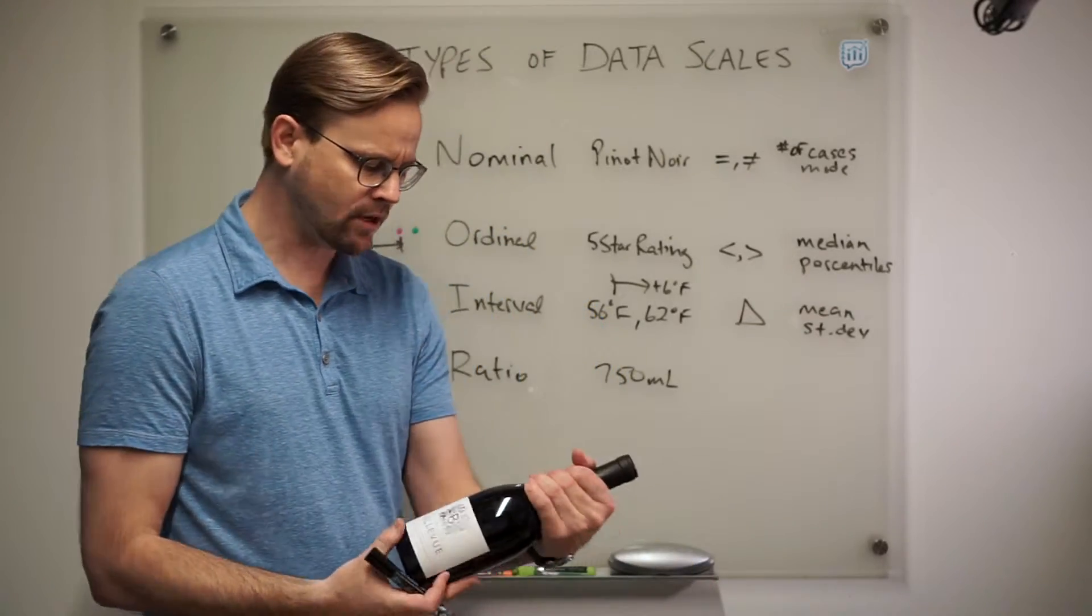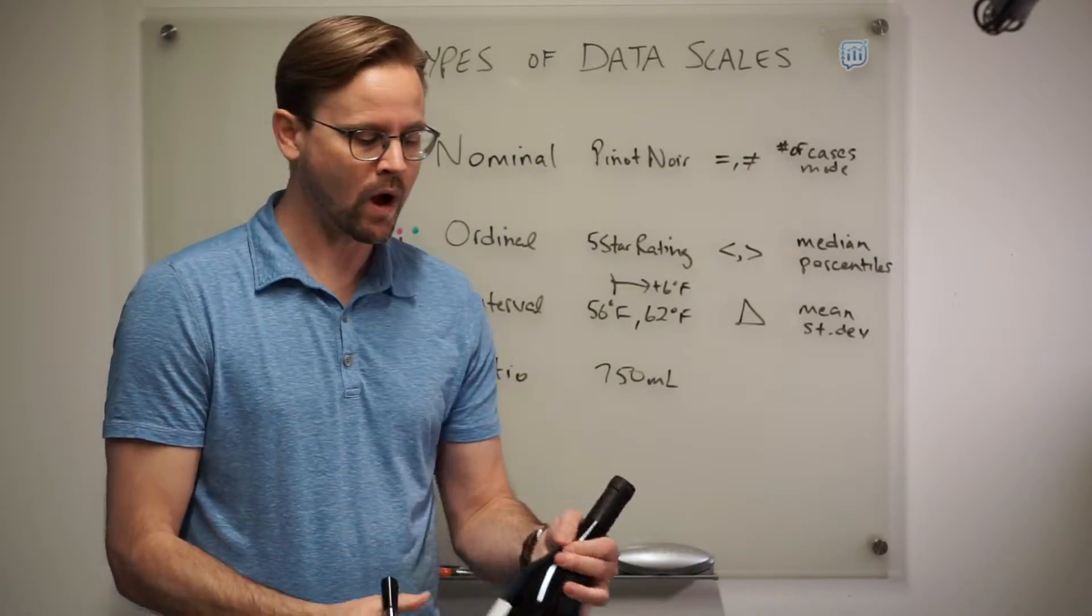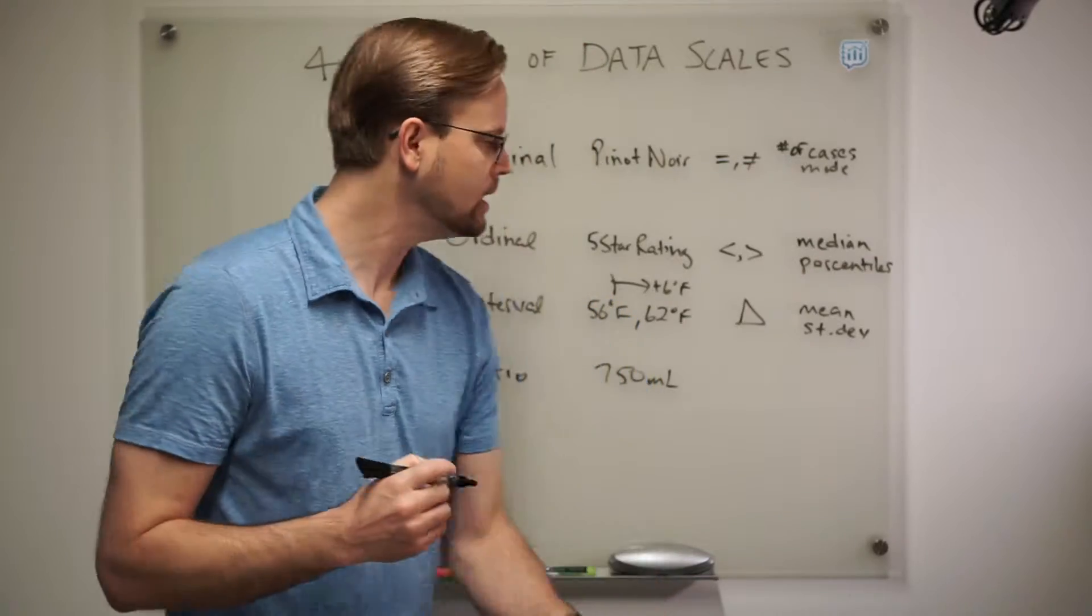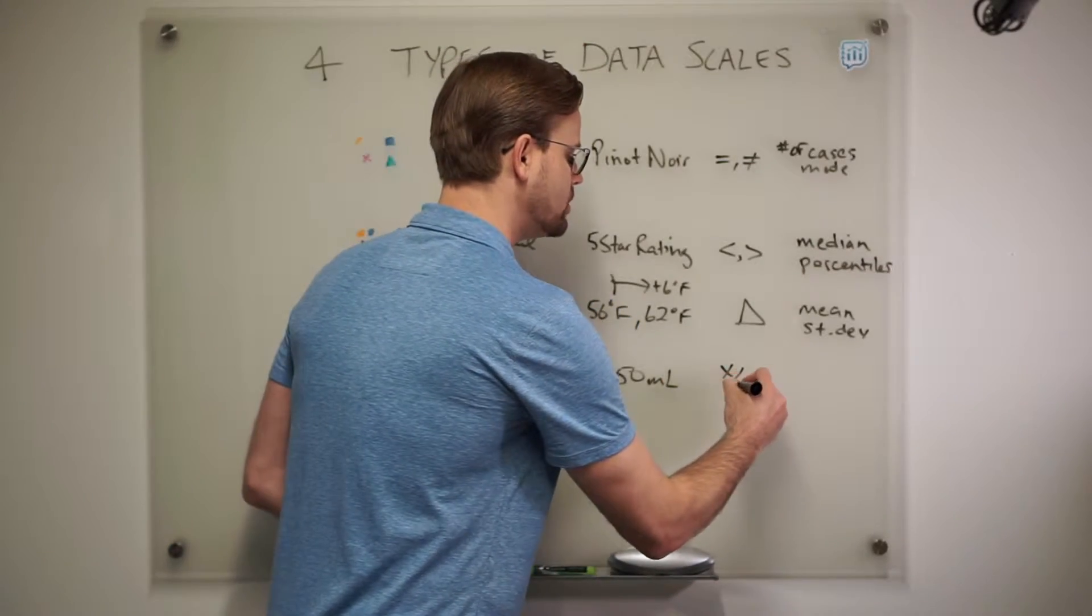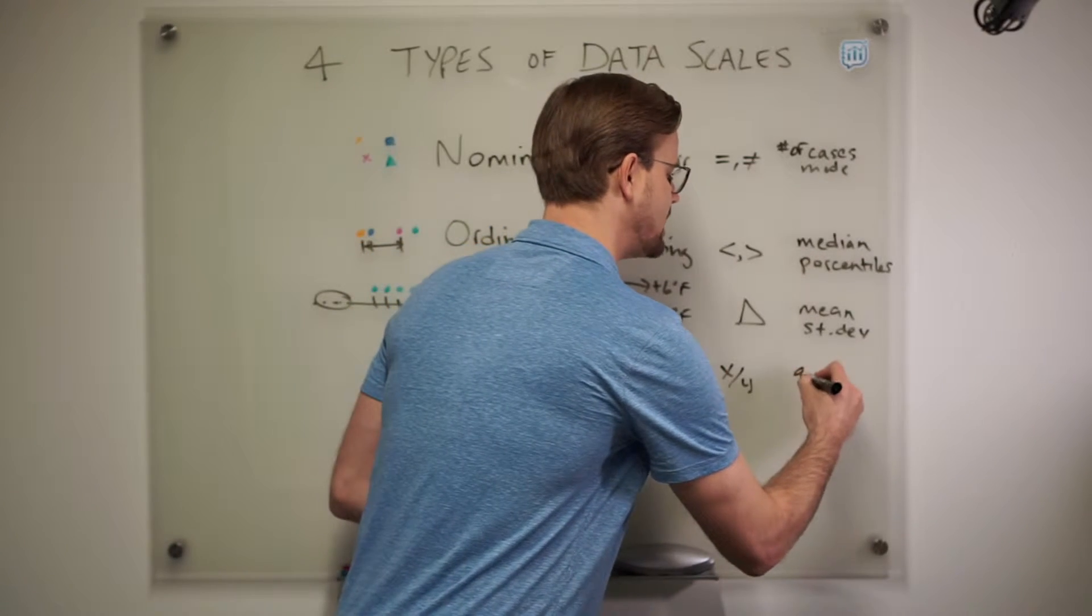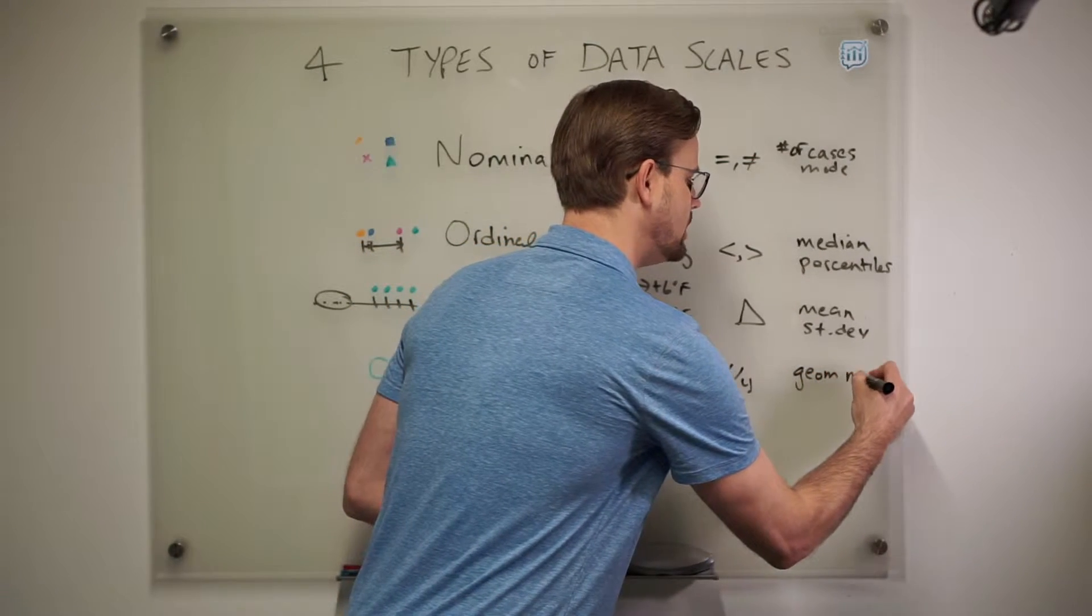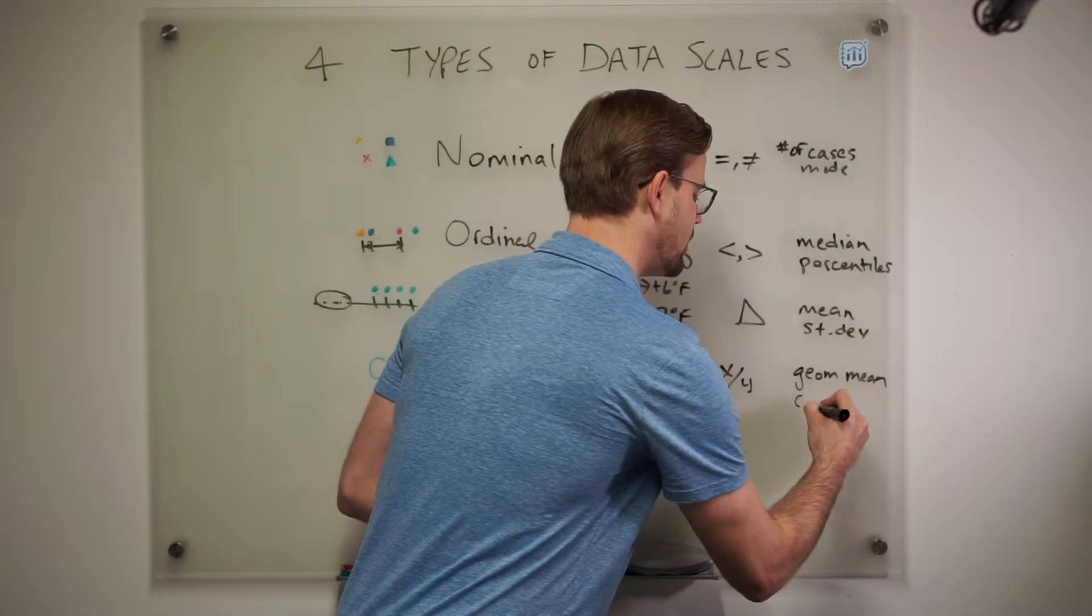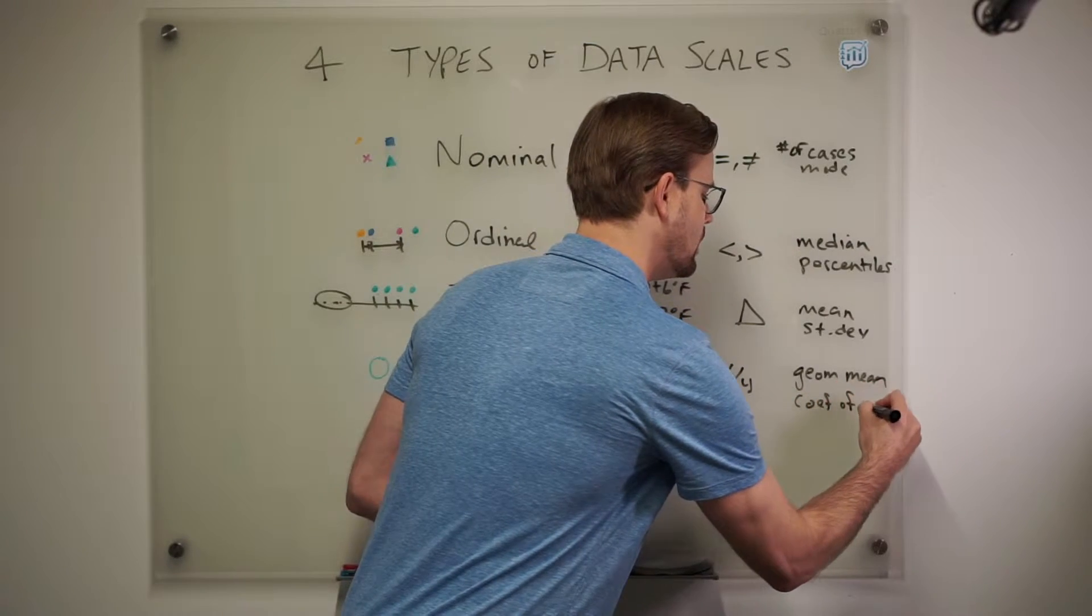Also, if I have 1500 milliliters, a larger bottle, that's twice as much wine or plus 100%. So now we compute ratios. Now we compute percent changes and also other more sophisticated statistics like the geometric mean, like the coefficient of variation.